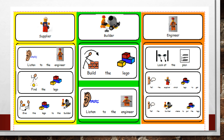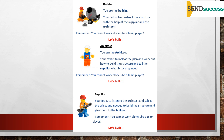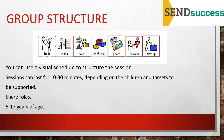Providing more clarity using a visual to describe the different roles can be really helpful as a reminder and prompt. There's one for the engineer on the right: they look at the plan, tell the supplier which Lego piece to get, and tell the builder where to put it. The builder builds the Lego and listens to the engineer, while the supplier listens to the engineer, finds the Lego brick, and gives it to the builder. Using a visual schedule to structure the session can be really helpful and reassuring for a lot of students.